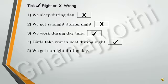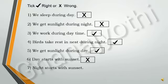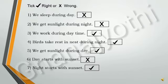Now, look at the fifth question: We get sunlight during day — it is correct. Look at the sixth question: Day starts with sunset — it is wrong, because day starts with sunrise. Look at the seventh question: Night starts with sunset — it is correct.